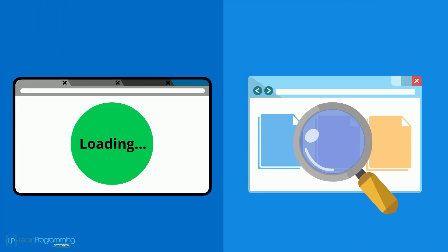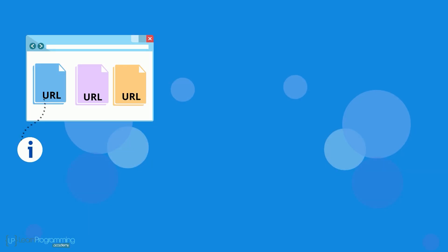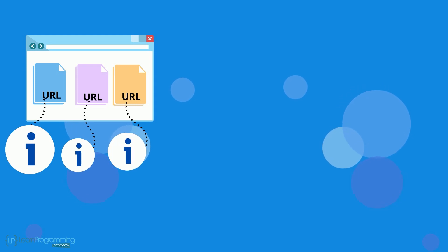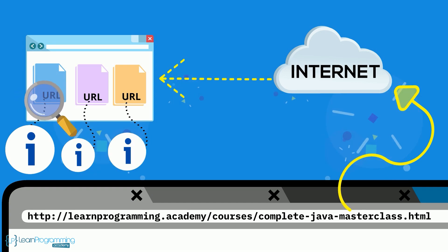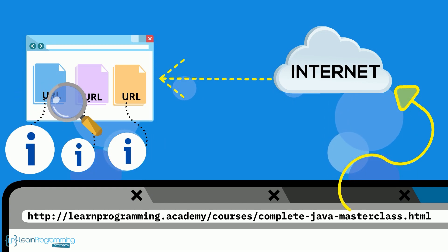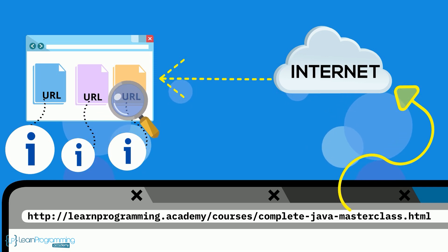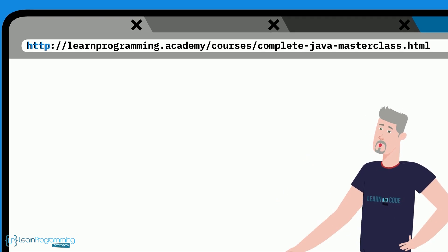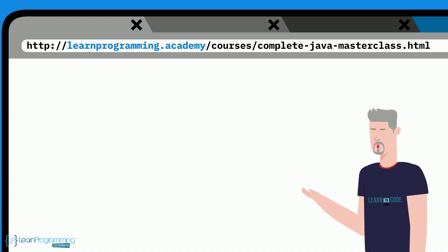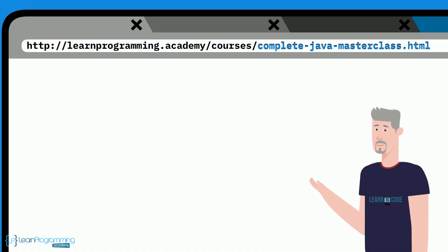In order to locate and retrieve a document or web page file, each is given a unique address called a Uniform Resource Locator, URL. Each URL contains sufficient information for a browser to send the URL into the Internet and have it find the correct web server and web page document file located on that web server. So every browser request is essentially requesting a URL. A typical URL example is: http://learnprogramming.academy/courses/complete-java-masterclass.html